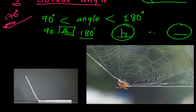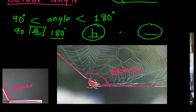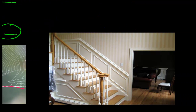For example, a laptop opened wide — the base and the cover form an angle greater than 90 degrees. Since 90 degrees would be here, but it is opened further, it forms an obtuse angle. Another great example is a spider — its legs spread out forming an obtuse angle. Also, a ladder leaning against a wall makes an obtuse angle with the floor.